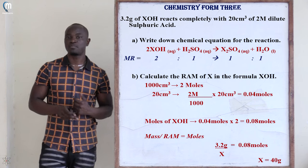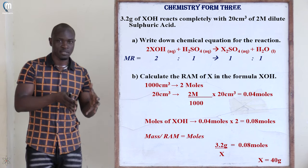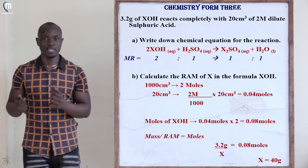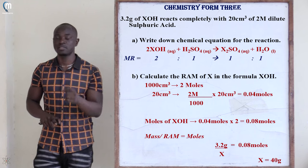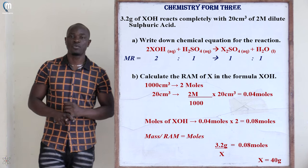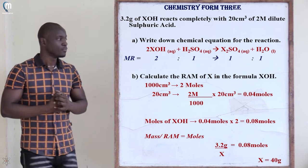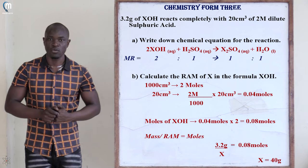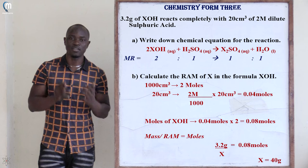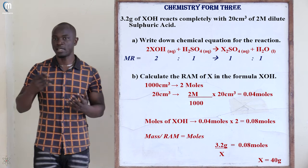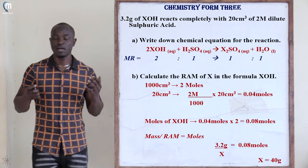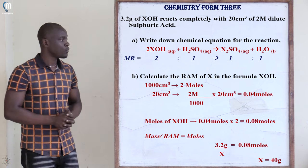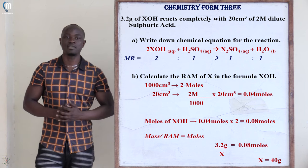Balancing the equation: 2XOH + H₂SO₄ → X₂SO₄ + H₂O. We place 2 in front of XOH, 1 in front of sulfuric acid, 1 for X₂SO₄, and 1 for water. The equation is now balanced.